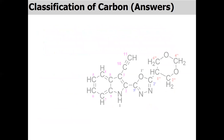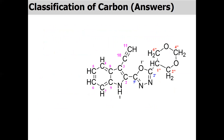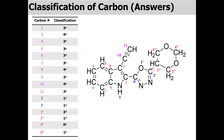Now let us see the example question. I am converting the line-angle structure into a CH notation for clear visualization. Carbon number two is a three degree carbon, bonded directly with three carbons. Carbon number three is four degree. Carbons four, five, six, and seven are each three degree carbons. Carbon six, for example, is visually bonded with three different carbons. Carbon number eight has one carbon on each side plus a carbon-carbon double bond, so it is considered quaternary or four degree carbon.